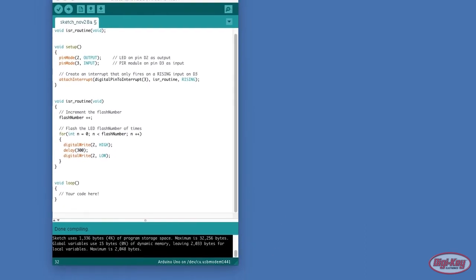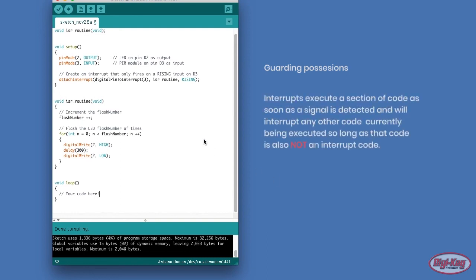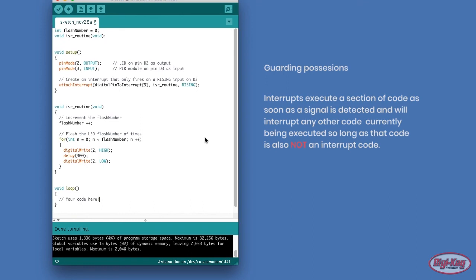If the PIR module was being used in a more critical situation, such as guarding possessions, then an interrupt may be a better solution. Unlike pin scanning, interrupts execute a section of code as soon as a signal is detected and will interrupt any other code currently being executed so long as that code is also not an interrupt code. We can therefore adjust our code for this project to include interrupts.